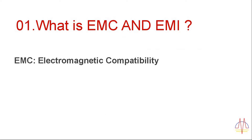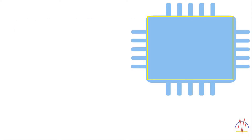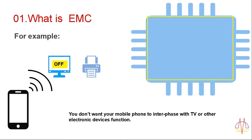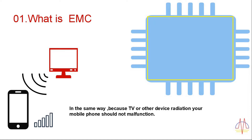What is EMI and EMC? EMC stands for electromagnetic compatibility and EMI stands for electromagnetic interference. For example, consider a mobile phone — the radiation emitted by the mobile phone should not disturb other devices' function or signal. In the same way, the radiation emitted by other devices should not disturb my mobile's function or signal. This phenomenon is said to be EMC.